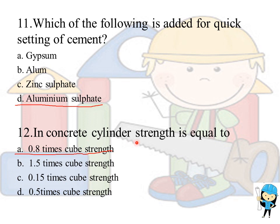The 12th question: in concrete, cylinder strength is equal to 0.8 times the cube strength. This is due to the difference in the slenderness ratio.